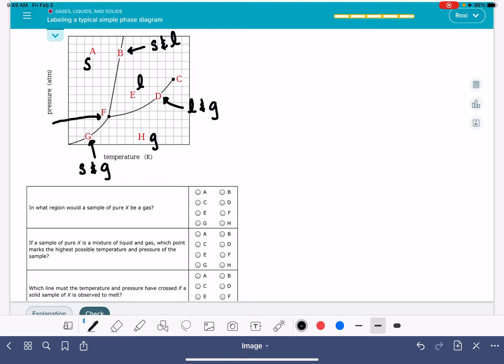Point F is our triple point, so this is where we have a solid coexisting with a liquid and a gas, all three states of matter together.